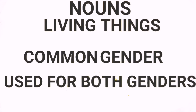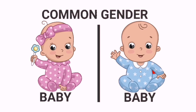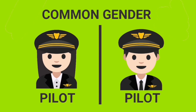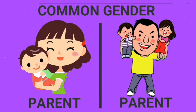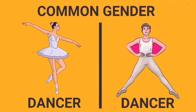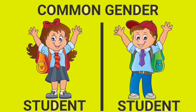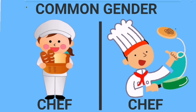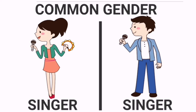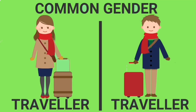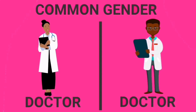Common gender uses a common word to refer to both the masculine and the feminine gender. Let's see some examples of common gender: Baby, Pilot, Teacher, Parents, Dancer, President, Cousin, Student, Chef, Singer, Astronaut, Traveller, Doctor. In all these examples, a common gender is used to refer to both the masculine and feminine genders.